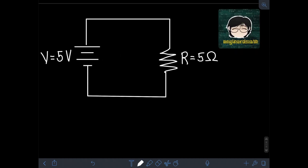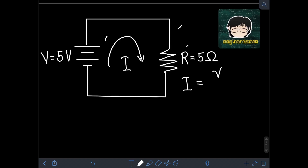Now let's solve some examples to illustrate Ohm's Law. Let's say we have a battery or DC voltage source with value V equal to 5V, and across it there is a resistance R equal to 5Ω. There will be a current I that will flow through this circuit. To find the current I, we apply Ohm's Law: I is equal to voltage over resistance. Substituting the values, voltage is 5V and resistance is 5Ω. Therefore, we get the current of 5 divided by 5, or 1A.